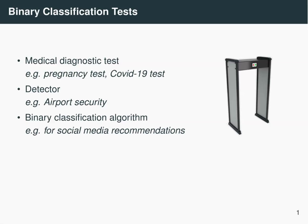These two examples actually have some physical machinery going on, but you can also apply this concept to binary classification algorithms. For example, Netflix might have an algorithm to decide whether to recommend a new movie to you or not, given the data that already exists about your preferences.